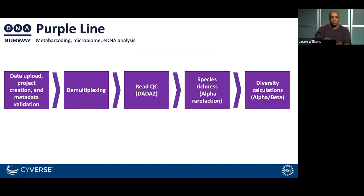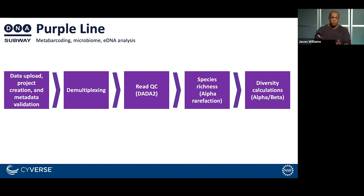Once you create a project in Subway, the steps will be familiar if you've used QIIME before. Bruce will go through them in detail. The first step after creating a project and validating metadata is demultiplexing the samples to separate them according to their barcodes. Then there's sequence quality control, followed by diversity determinations through species richness (alpha diversity) and other calculations and visualizations. It's quite powerful — you can play with interactive things.